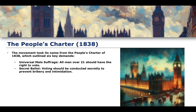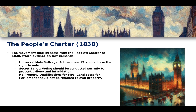The second demand was for the introduction of a secret ballot, so that voting should be conducted secretly to prevent bribery and intimidation in elections. Third, there should be no property qualifications for members of parliament. In addition to property qualifications for voters, there were also property qualifications for those who wanted to stand as candidates, and the People's Charter demanded that candidates for parliament should not be required to own property.